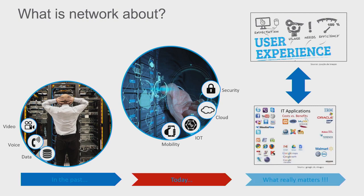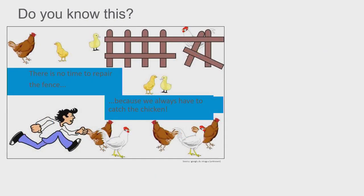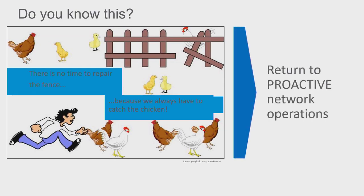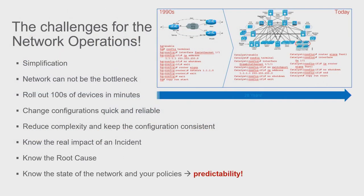What really matters to the business is the user experience and our applications. If we have a poor user experience, the end user is going to go somewhere else. Everyone looks at Amazon, Target, Walmart — they've created world-class user experiences. I'm a Prime member; I order something and two days later it's on my front door. The likelihood of me going somewhere else went down drastically. Right now, a lot of our engineers don't have time to repair the fence because they're too busy catching chickens — fixing small issues every single day without addressing the underlying problem. We need to get back to proactive network operations.